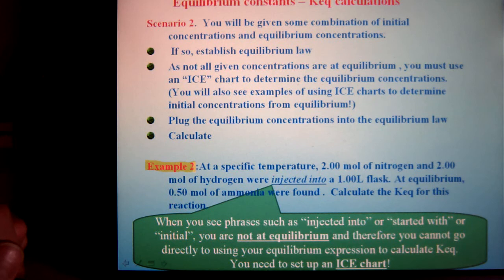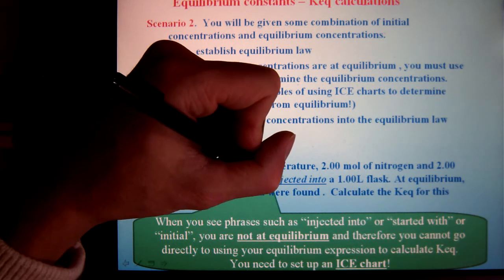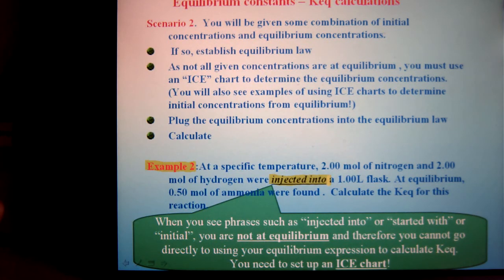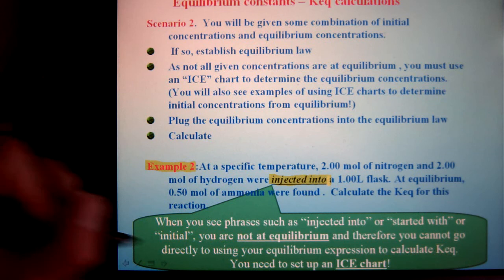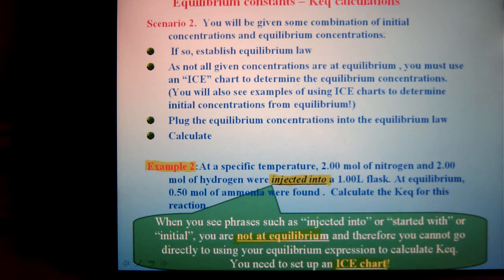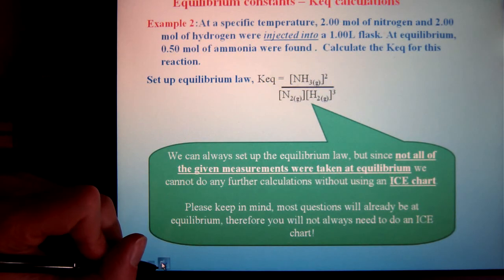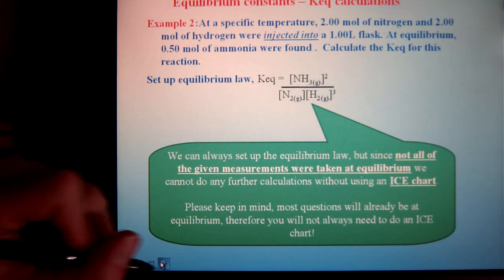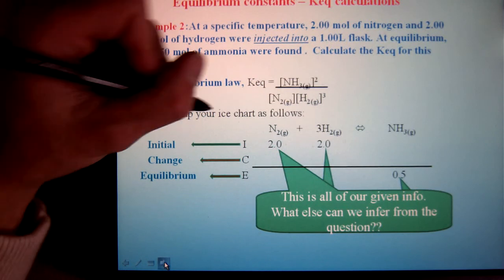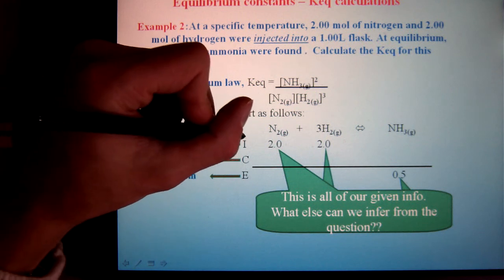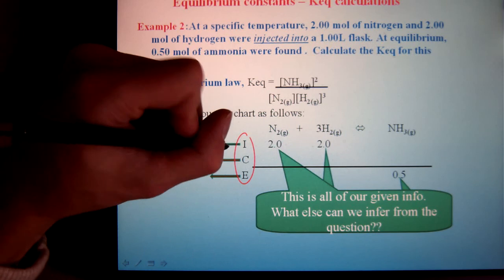Now, in this scenario, we have some different words. Notice it's saying, moles of hydrogen were injected into a flask. Well, what's that mean? That means we're not at equilibrium. And if we're not at equilibrium, we've got to figure out our equilibrium values, which means we need to use what we call an ICE chart. They're not too bad. So, how do we work it out? Same as before, we want to set an equilibrium law, because at some point, we're going to have to use it. And then, we have what we have called our ICE chart. ICE. Initial Change Equilibrium.